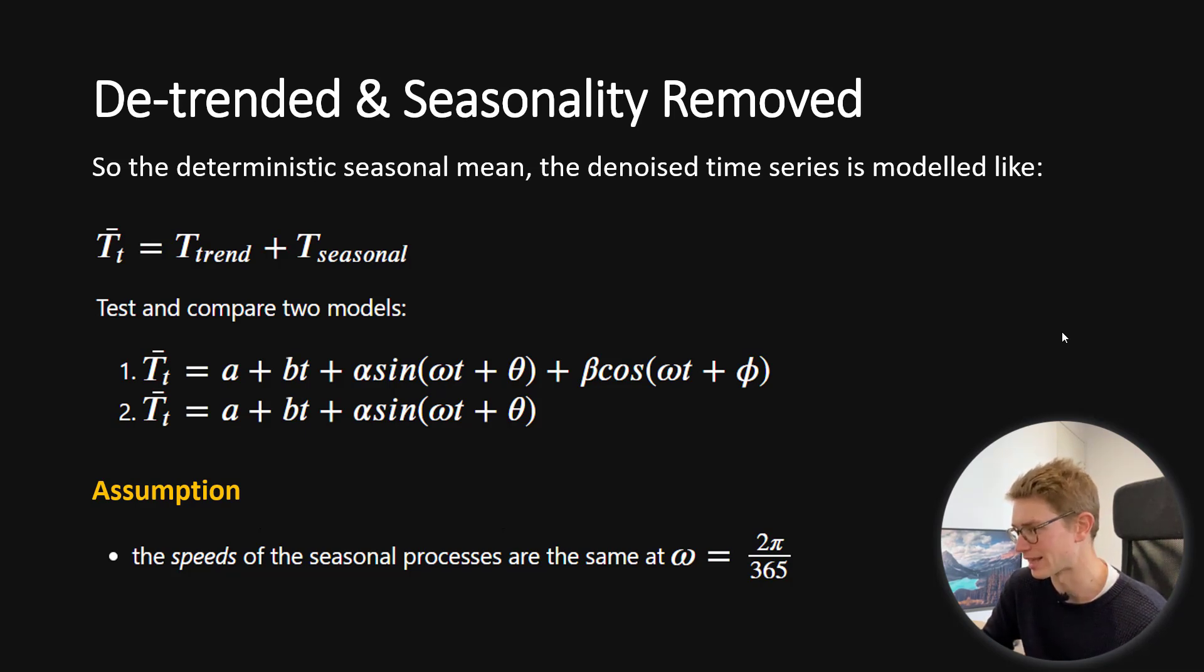The assumption that we're going to make here is that the speeds of the seasonal processes are the same and that is a meager 2 pi over 365 days in a year. I don't want to actually leave that as a parameter in the model because, again, I'm worried about overfitting and then funny kinks. So, we'll actually enforce that detail.